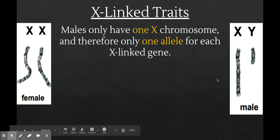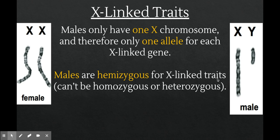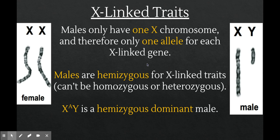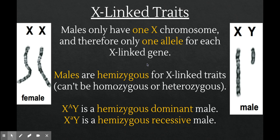Males only have one X chromosome and therefore only one allele for each X-linked gene, which means the terms homozygous and heterozygous don't apply — those require two copies. So we need a new term: hemizygous. A male with one copy of the dominant allele is called hemizygous dominant, and if he has one copy of the recessive allele, he's hemizygous recessive.